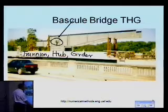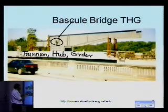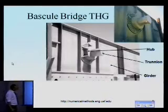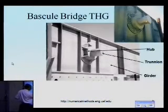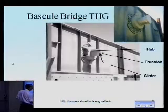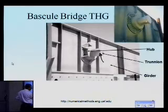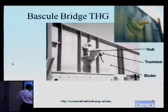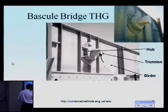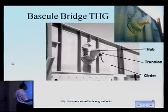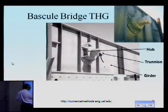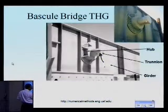Taking a closer picture makes it more evident. The trunnion is a hollow steel shaft — in this case about a foot in diameter. The hub is attached to the girder of the bridge, on which the span of the bridge is placed. That's why it's called a trunnion hub girder assembly. The assembly works by taking the trunnion and cooling it down in a liquid medium so it shrink-fits into the hub.